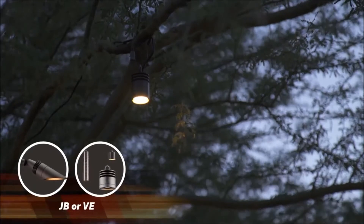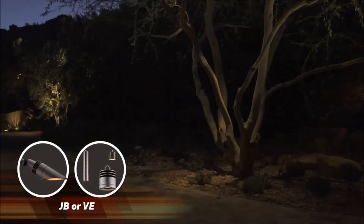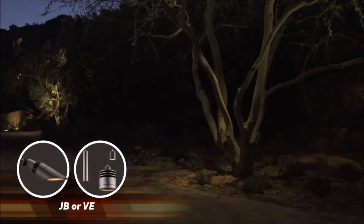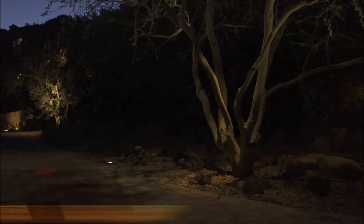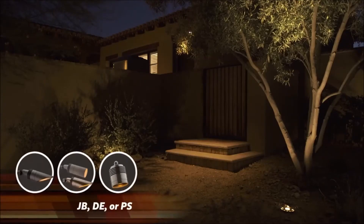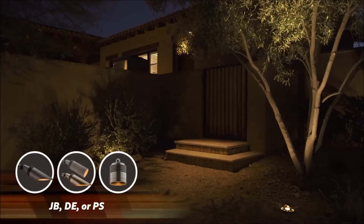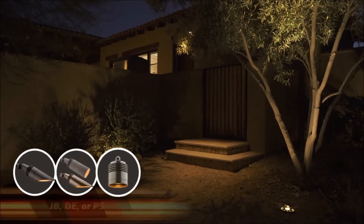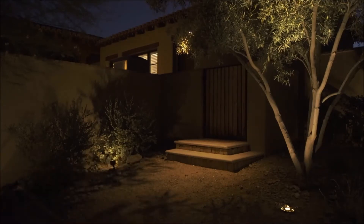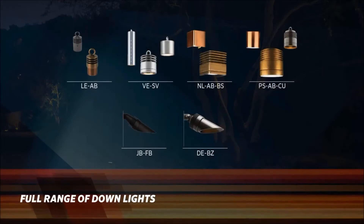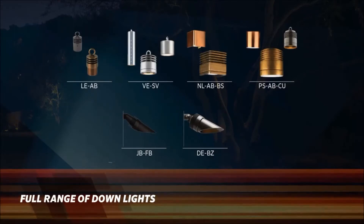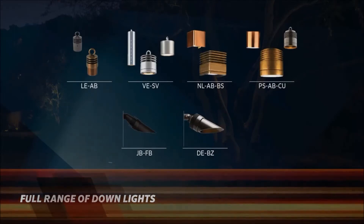When you install down lights above a tree canopy, you can achieve a very dramatic moonlighting look with shadows. You can also use down lights to illuminate walkways or areas with changing elevation. Use the full range of FX Luminaire's down lights to create many elegant looks.